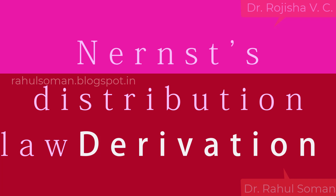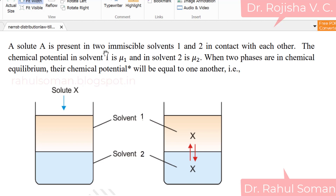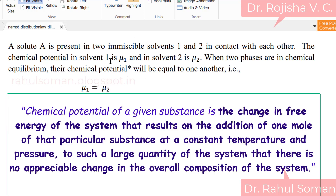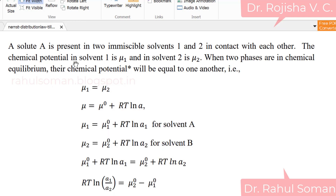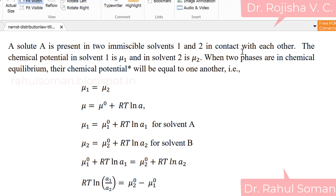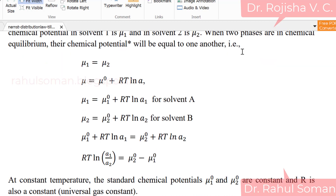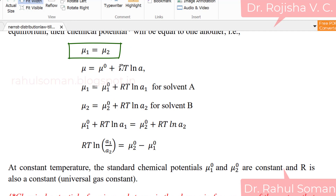This is a very sure question for the exam — it is usually asked. A solute is distributed or added to the two immiscible solvents, solvent one and solvent two. You have heard about the chemical potential term: it is the energy change when an extra species is added to the system. Here we are adding a solute to the two solvents. For solvent one there will be a chemical potential mu one, and for solvent two there will be a chemical potential mu two. At equilibrium between these two solvents, mu one is equal to mu two.